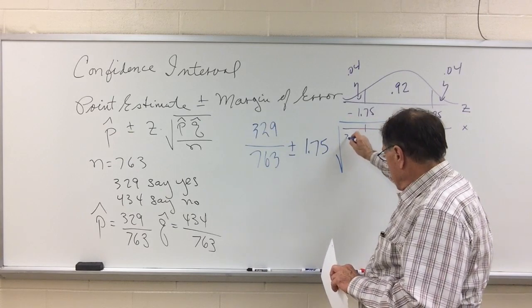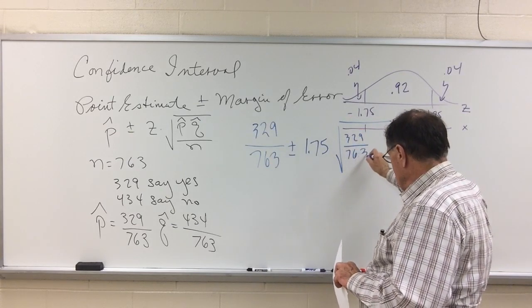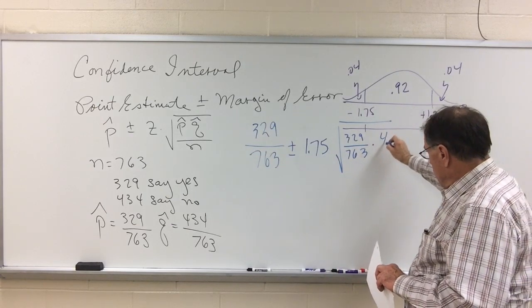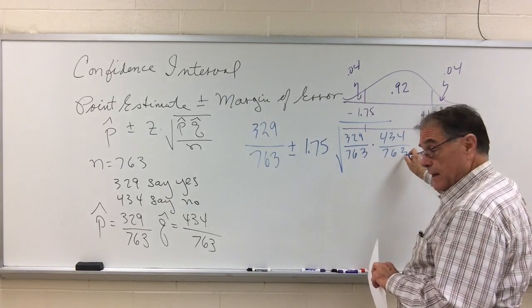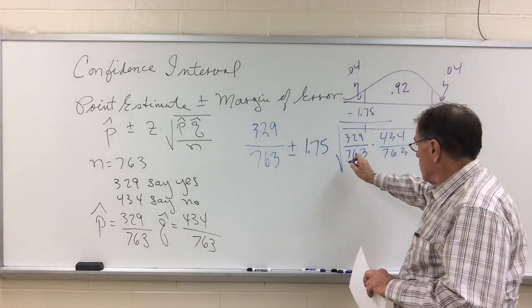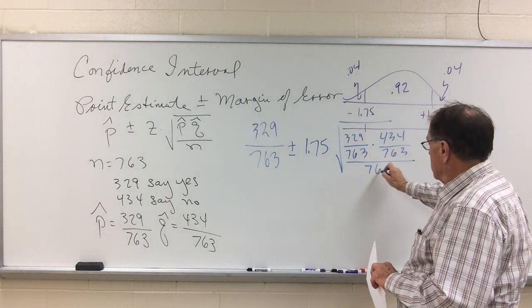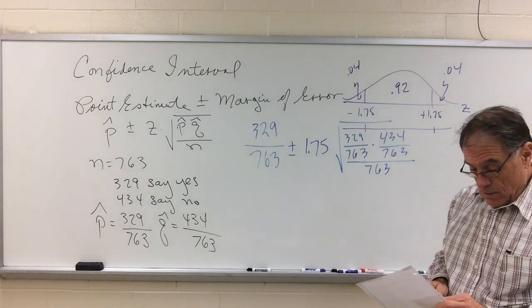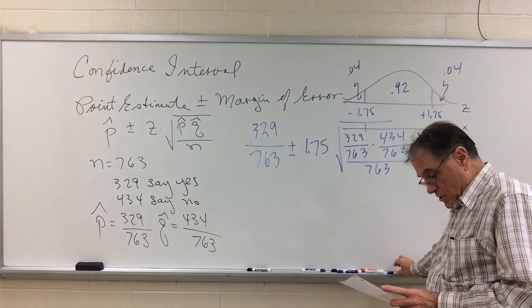So negative 1.75, positive 1.75 are my z-scores and then I will convert and get the x-scores here which will be the cutoffs for this confidence interval. And to get those, then I'm going to come over here and continue this construction by z-score plus or minus 1.75 times the square root of 329 divided by 763 times 434 divided by 763, and we're all divided by 763.